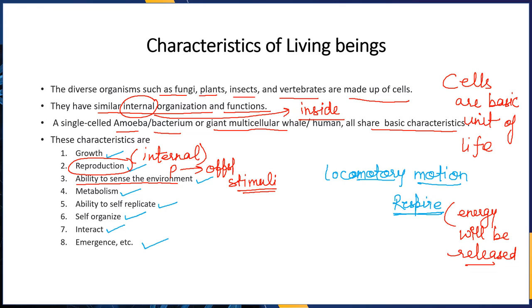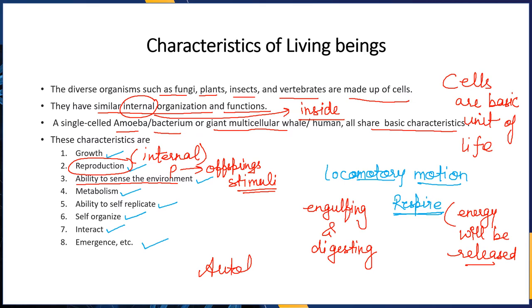Genetic information is passed from parents to the next generation. Living things acquire and fulfill their nutritional requirements to survive through the process of nutrition, which involves engulfing and digesting food. Some living organisms are autotrophs — organisms that make their own food and are not dependent on other organisms for it.